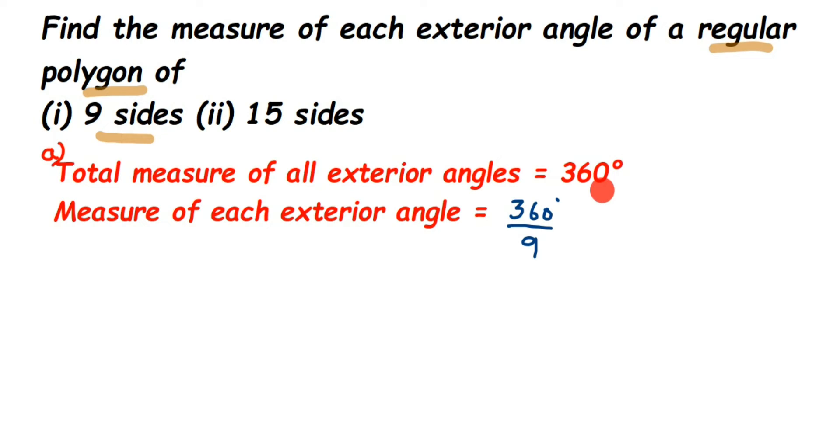And this is only applicable when it is a regular polygon because in regular polygons all exterior angles are of the same measure. If it is any other normal polygon, then it is not necessary that every exterior angle or interior angle should be the same. But in the question we have mentioned it is regular, then only we can apply this. You just divide that exterior angle by the number of sides. That's it.